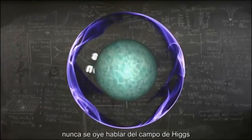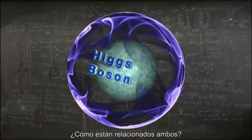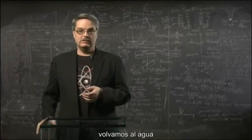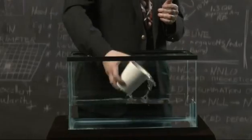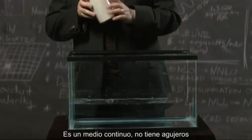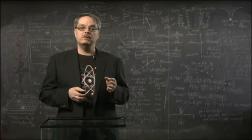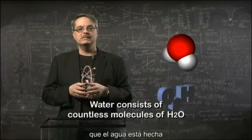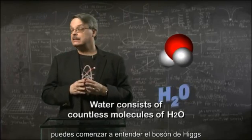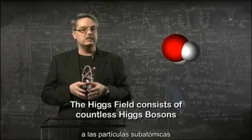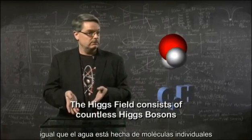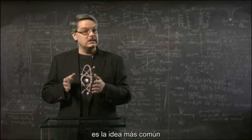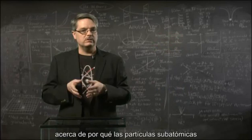Now, in the press you don't hear about the Higgs field, but rather the Higgs boson. How are these two things related? The Higgs boson is the smallest bit of the Higgs field. To understand how that works, we should again return to water. Everyone knows what water is — if you're immersed in it, you know that water is everywhere. It's a continuous medium and there are no holes in it. We also know that water is made of molecules, specifically H2O. With the realization that water consists of countless individual molecules, you can now begin to appreciate the Higgs boson. The Higgs field that gives subatomic particles their mass is made of countless individual Higgs bosons, just like water is made of individual molecules. You should keep in mind that the Higgs boson hasn't been discovered yet, and what I'm describing is simply the most popular idea as to why subatomic particles have the masses that they do.